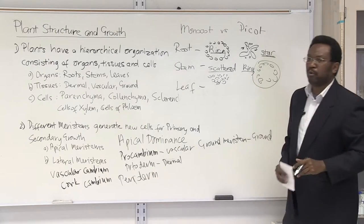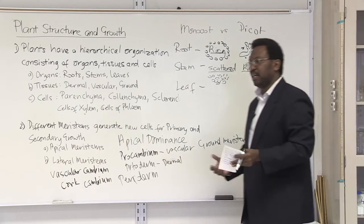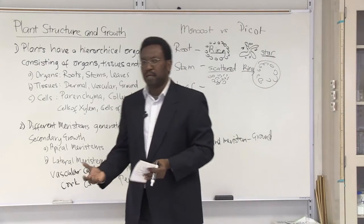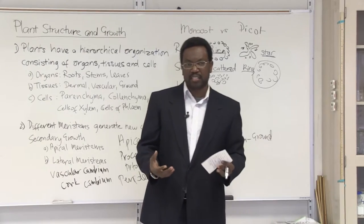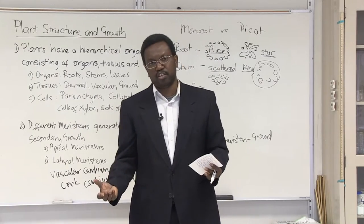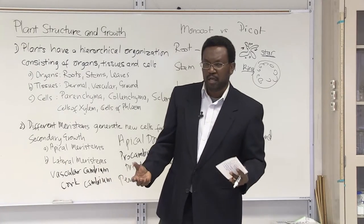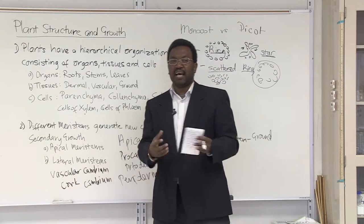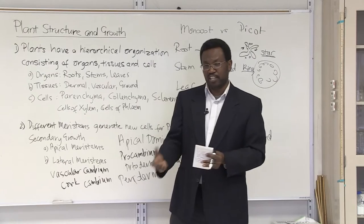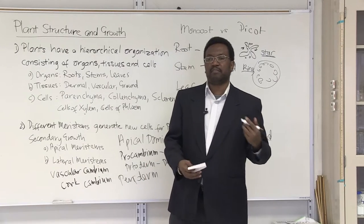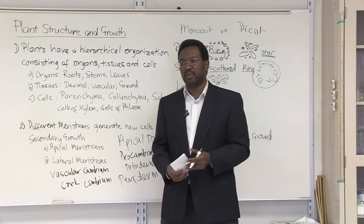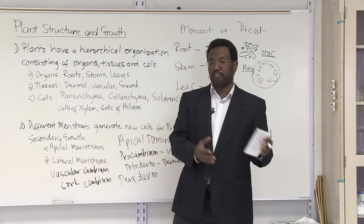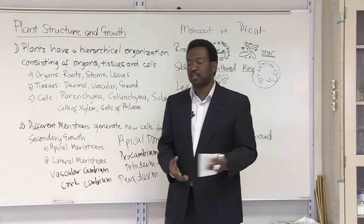This is very important because when you look under the microscope, the only way you can differentiate is through the organization — through these vascular arrangements. You're going to have to become very familiar with these in order to differentiate monocot from dicot.